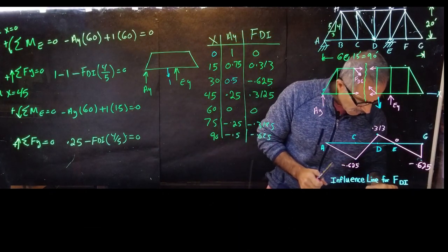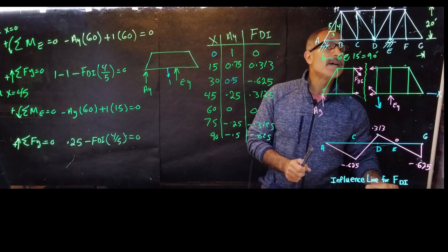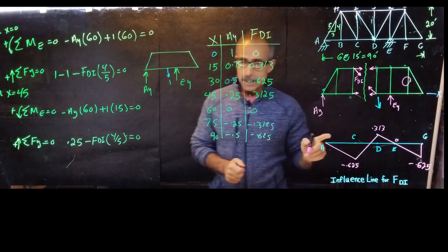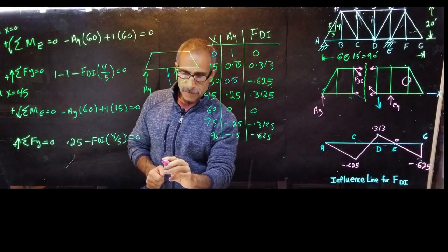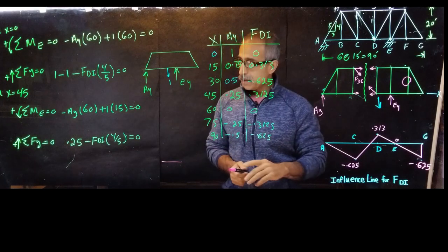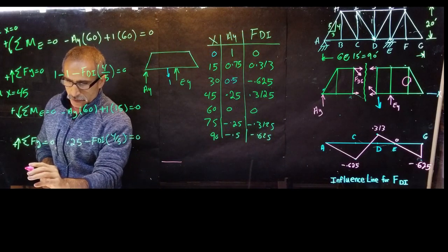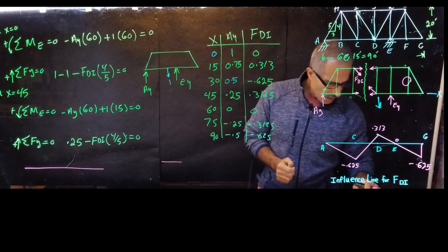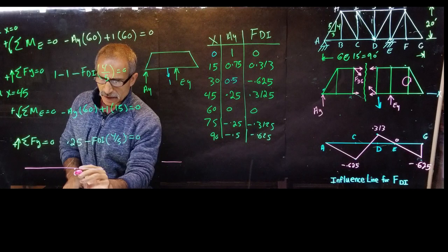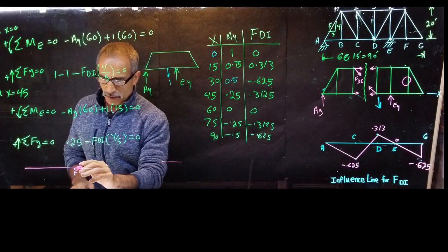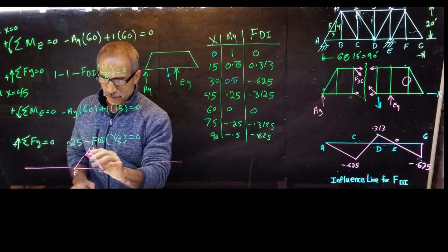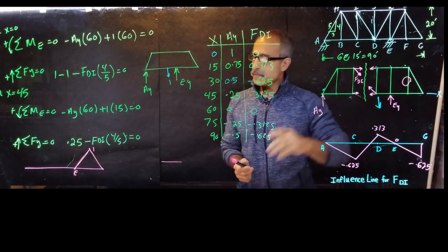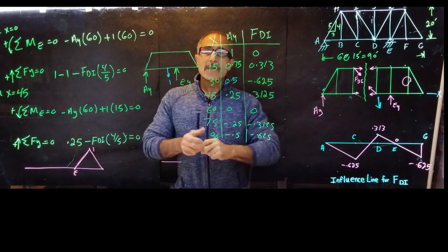Now here's a challenge for you: draw the influence line for member FL. The influence line for FL is going to be a straight horizontal line — FL is a zero-force member until the load comes down on that side. The reaction at E pulls it, so it goes up and then comes back down. The rest of the values are zero. See if you can figure that out — good luck.